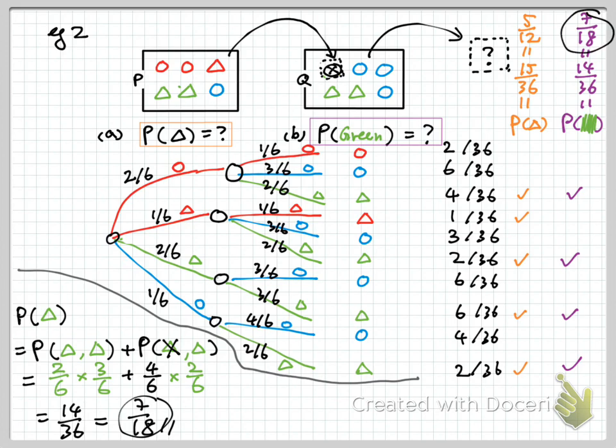The purple answer is from the tree diagram; the black one here is from thinking about what the necessary branches are — you have the tree diagram in your head and just consider the necessary branches. So this is about the tree diagram and how we can do the same question without actually drawing it. Next time, we look at some past paper questions. Thank you.